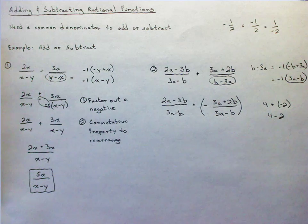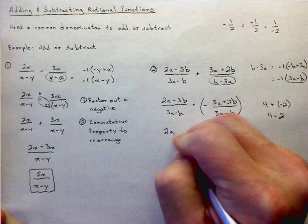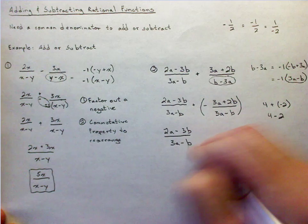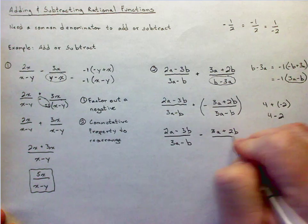So I can do the same right here. I can just simply say okay, well that's 2a minus 3b over 3a minus b minus 3a plus 2b, 3a minus b over 3a minus b.